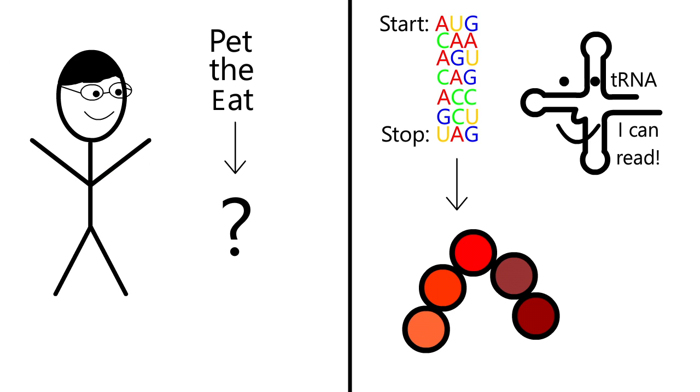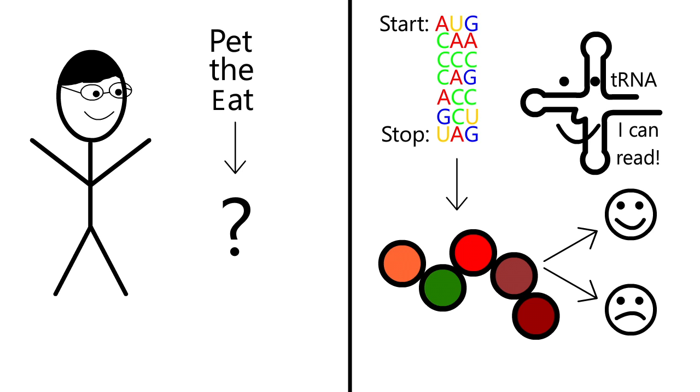In the same way, a mutation in DNA can result in a protein that is either still functional, partially functional, or completely dysfunctional. If the protein is fairly unimportant, a mutation may not cause any disease. If the protein is vital, a mutation can cause a severe disease.